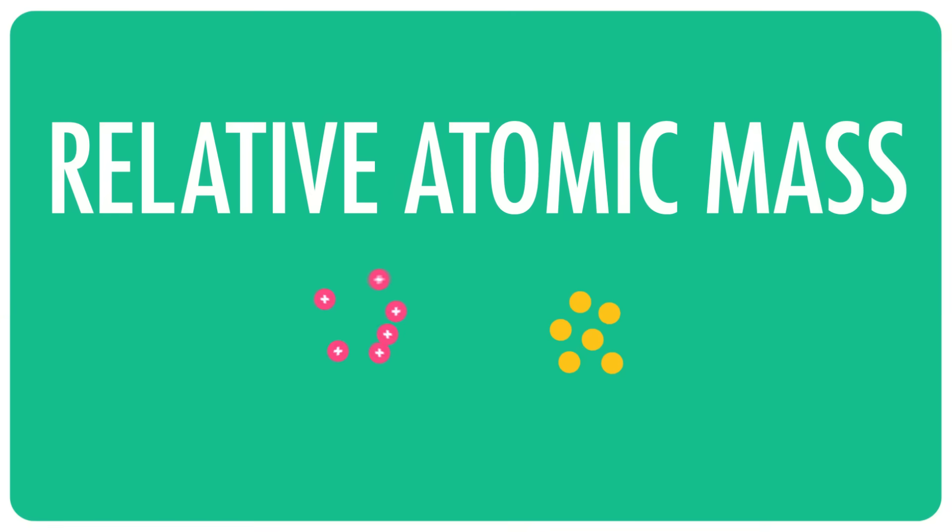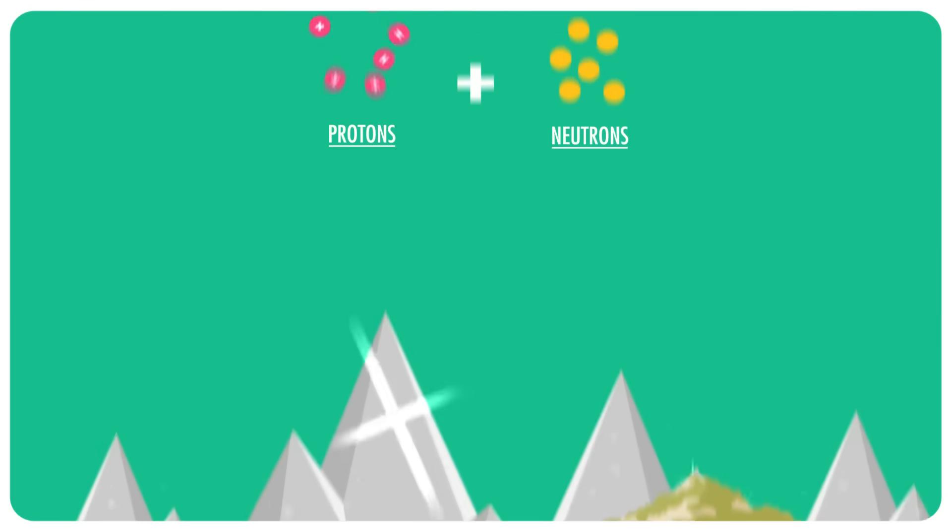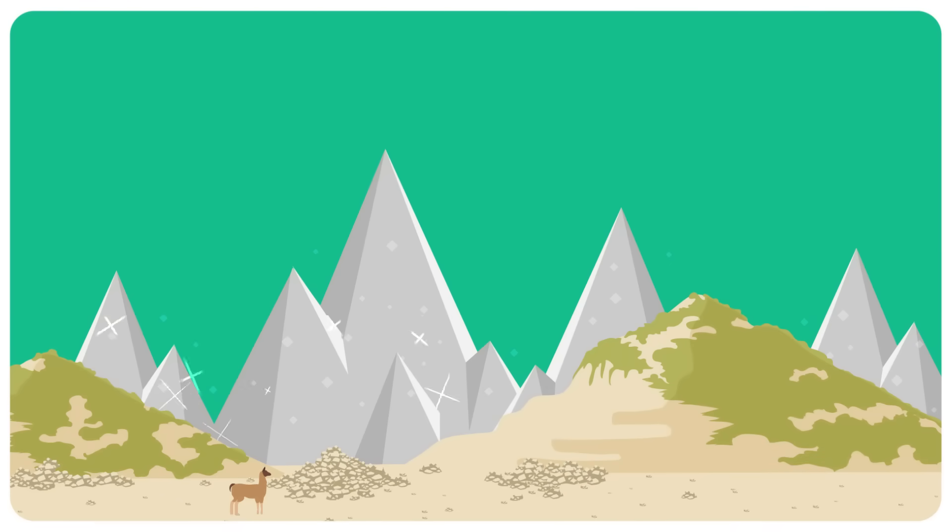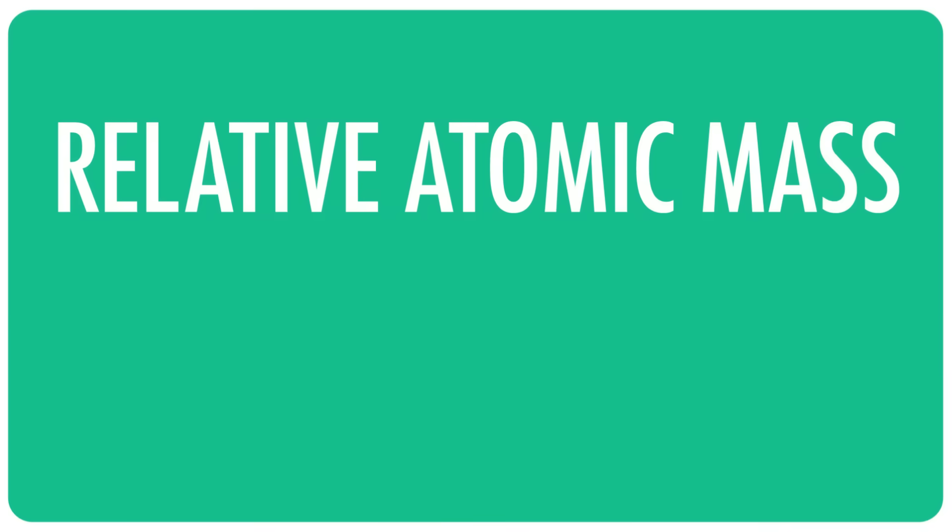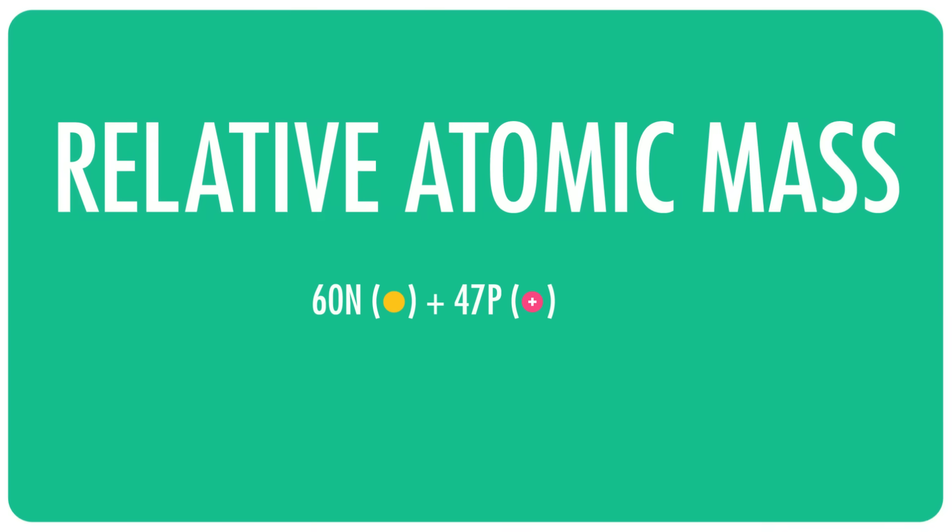The atomic number of silver doesn't change as the number of neutrons changes, because the number of protons stays the same. But the relative atomic mass does change. Relative atomic mass, which used to be called atomic weight back when I was in school, is basically the number of protons plus the number of neutrons averaged across all the silver on Earth. Because silver has two different stable isotopes, each with a different number of neutrons, its relative atomic mass ends up not being a whole number. About 52% of silver has 60 neutrons and about 48% has 62. The relative atomic mass then ends up being about halfway between 107 and 109: 107.8682.